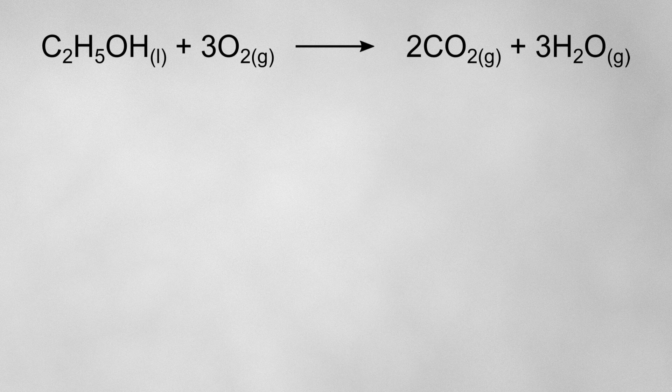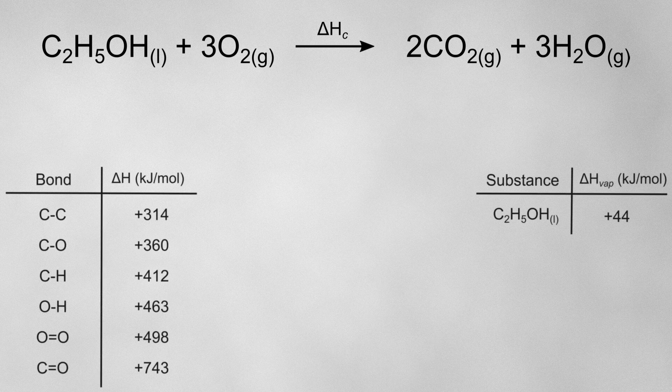We could be asked to calculate the enthalpy of combustion for ethanol using bond enthalpies. We set the Hess cycle up using whatever types of enthalpies we've been given, so we'll set this one up using bond enthalpies.